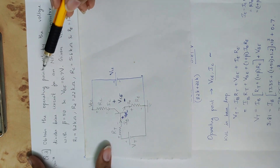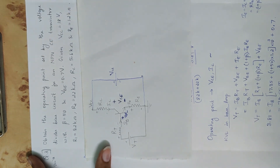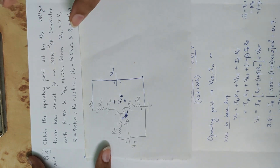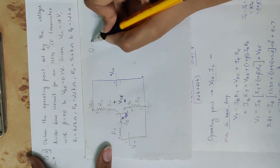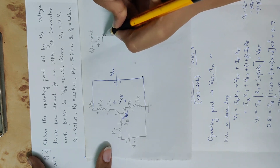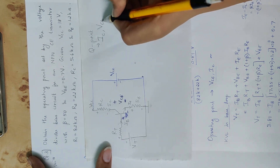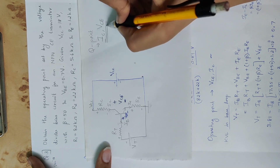How do you find the operating point? The operating point is defined by IC and VCE — those are the two parameters we are going to find.